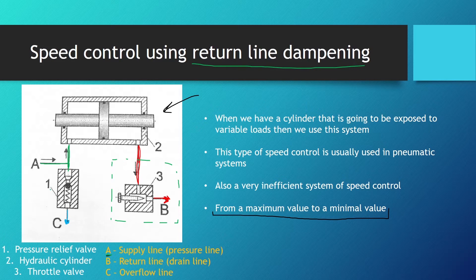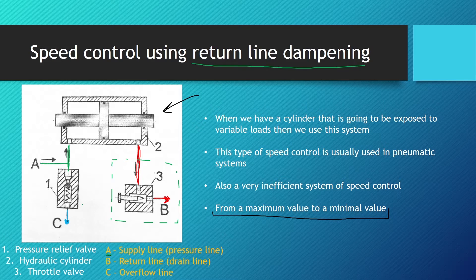There is a pressure relief valve in the system — when pressure reaches a critical value, the relief valve opens and lets a certain amount of fluid go to the overflow line and back to the reservoir, ensuring the system runs within a certain pressure limit. As dampening on the return line increases, the amount of work fluid going through the pressure relief valve increases as well, and the speed of the piston reduces. This type of speed control is usually used in pneumatic systems; the only difference being that air from the cylinder is discharged directly into the atmosphere rather than returning to a reservoir.